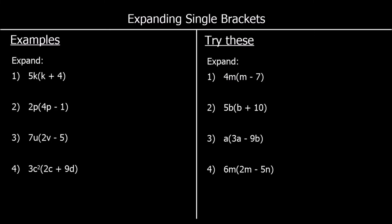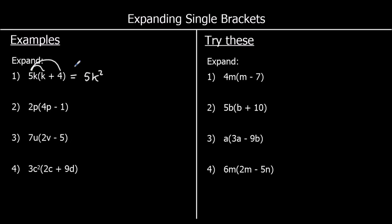Another set of examples — we're going to follow the same steps, multiplying the term outside by both terms inside. The first one: we've got 5k times k. 5k means 5 times k, so it's 5 times k times k. k times k is k squared, and 5 times k squared we just write as 5k². And 5k times 4: that's 4 times 5 times k, which is 20k.